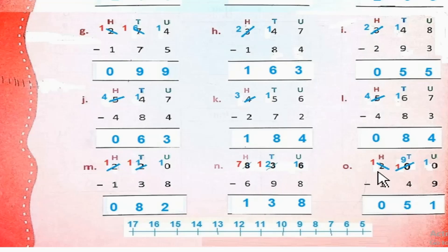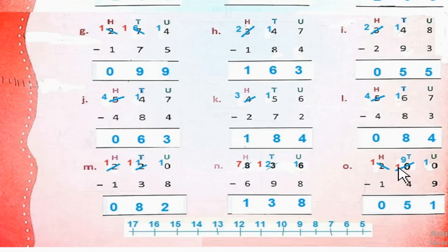Part O: 200 minus 149. 0 से 9 minus नहीं होता, so we will borrow. So the answer is 51.